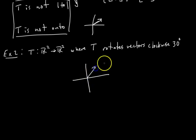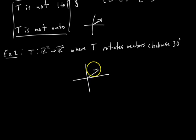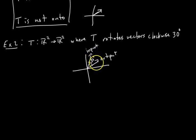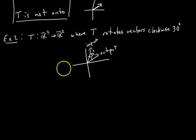If you have a vector you're considering as an output, are there multiple inputs that could yield that one output if you're just rotating clockwise by 30 degrees? No. The only input vector that yields a given output is the vector 30 degrees away from it. So here would be your input vector, here would be your output vector, with an angle of 30 degrees. Every output has a unique input — that's the definition of one-to-one. So T is one-to-one.